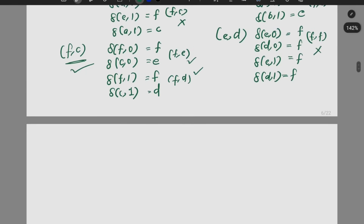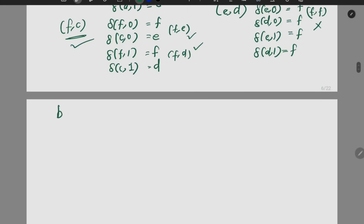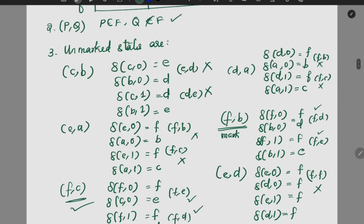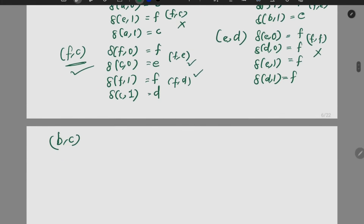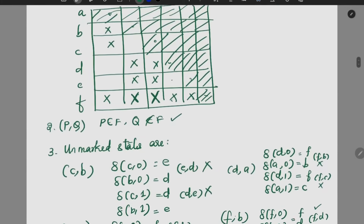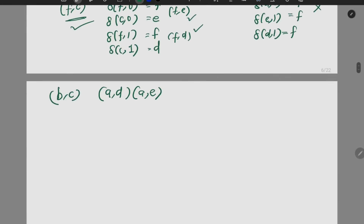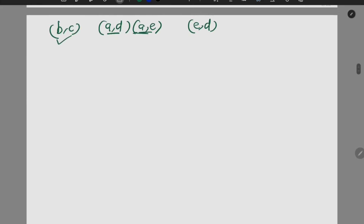For E,D: delta(E,0) is F, delta(D,0) is F; delta(E,1) is F, delta(D,1) is F — giving F,F, which is not an existing pair, so the initial condition is satisfied. We have now marked all distinguishable pairs. The states that remain unmarked stay together. B and C are both final states. When we circle two states, here we have to circle F — it is also a final state, so circle it twice. That is the result of A,D,E.